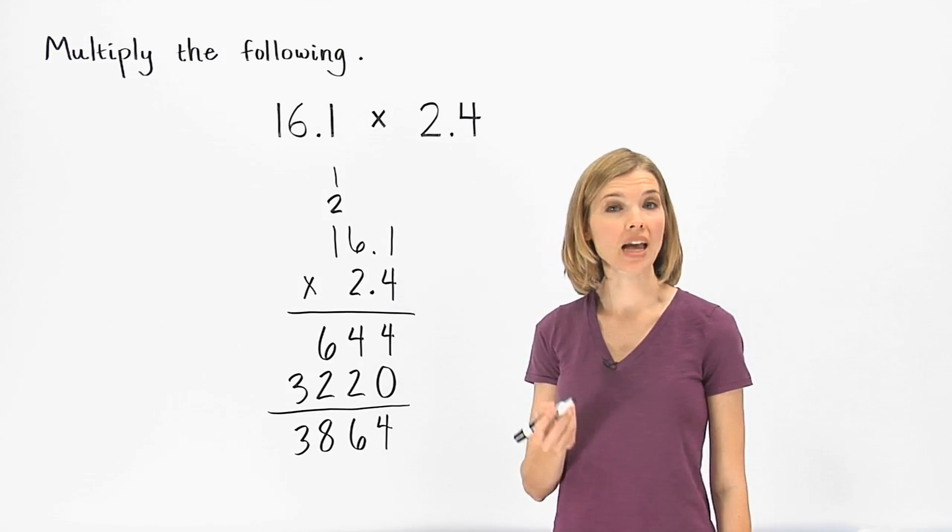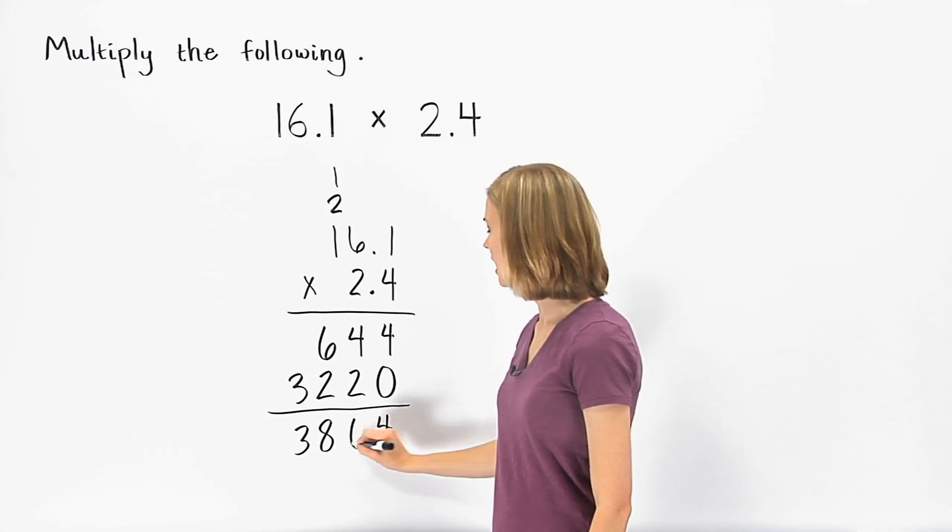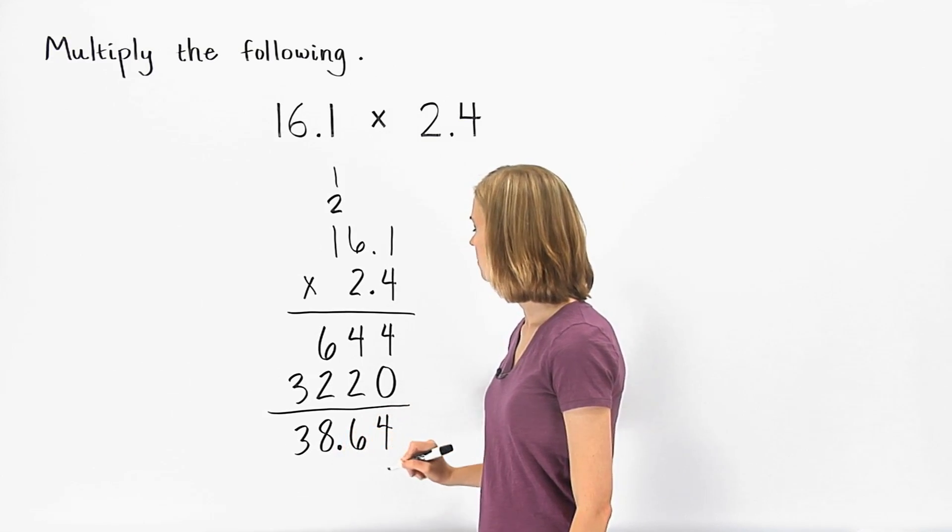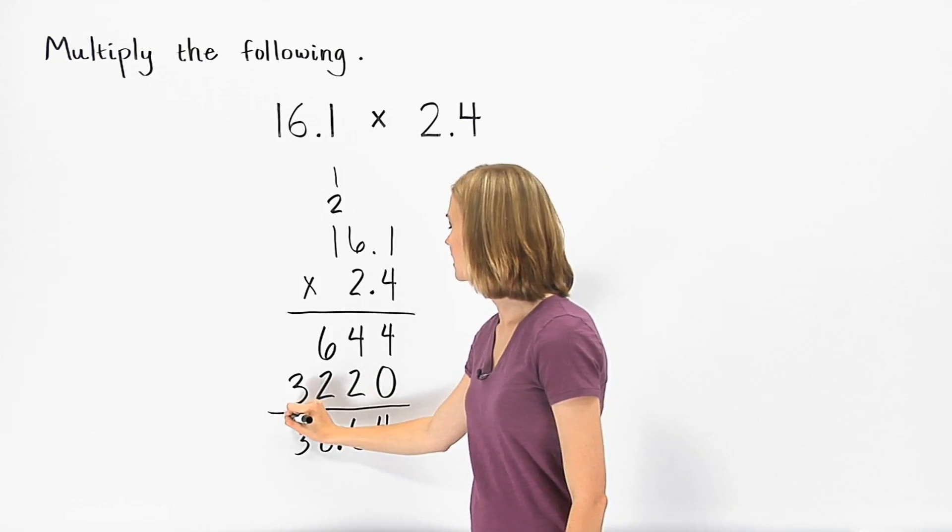This means that our answer will have two digits to the right of the decimal point. So our answer is 38.64. So 16.1 times 2.4 is 38.64.